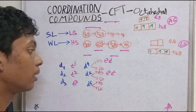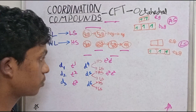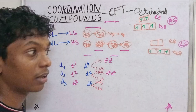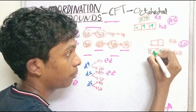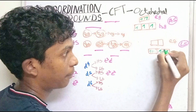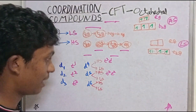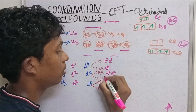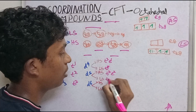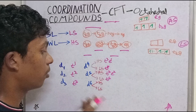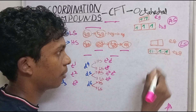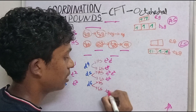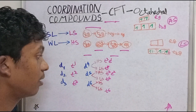Low spin — how do we know it is low spin? Pairing. So now pairing: low spin D4 gives T2G⁴, low spin D5 gives T2G⁵. Now D6 — pairing continues, so low spin D6 gives T2G⁶.